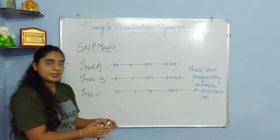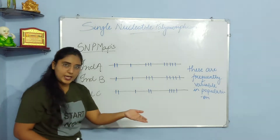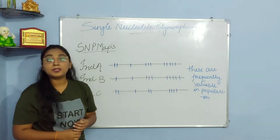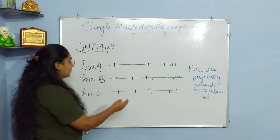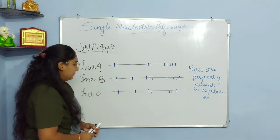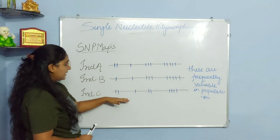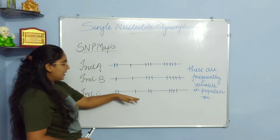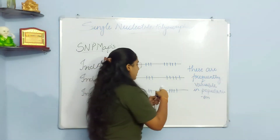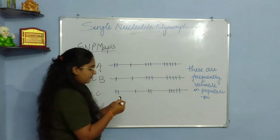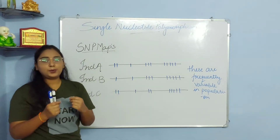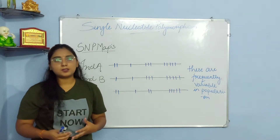Ho sakta hai person A ko jo disease hai, wahi person B ko bhi hai — magar person A ko jo treatment diya ja raha hai, usse person B thik nahi ho pa raha hai, jabki disease is same hai. This is due to the single nucleotide polymorphism — yahan single nucleotide vary kar raha hai. Individual C mein bhi yahan par do nucleotide present hain as usual, ek present hai — yahan par ek nucleotide present nahi hai. Bas is position mein difference hai, aur yahi single nucleotide ki variability laata hai amongst the population.